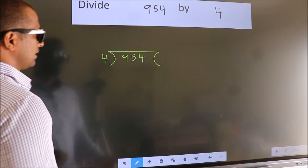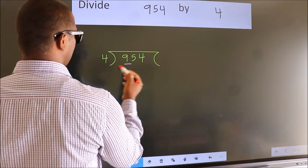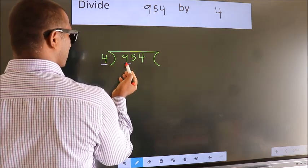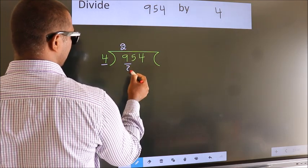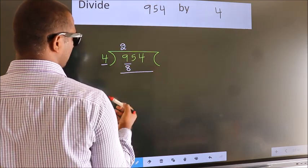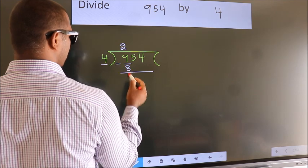Next. Here we have 9, here 4. A number close to 9 in 4 table is 4 twos, 8. Now, we should subtract. We get 1.